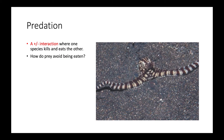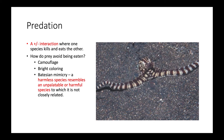There are several ways prey can avoid being eaten. One is camouflage — a great example being a chameleon. Another is bright coloring, which tends to signal to predators that the prey is potentially toxic. We also have different kinds of mimicry. Batesian mimicry is when a harmless species makes itself look like an unpalatable or harmful species to which it is not closely related. For example, an octopus can lengthen itself to resemble a sea snake — a harmless species resembling a harmful one it's unrelated to.